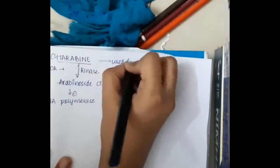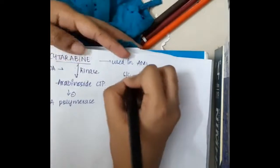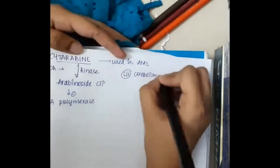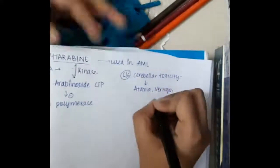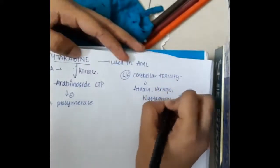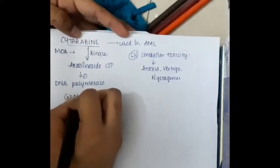This inhibits DNA polymerase. Cytarabine is used in AML (acute myeloid leukemia). Side effects include cerebellar toxicity, causing ataxia, vertigo, and nystagmus.